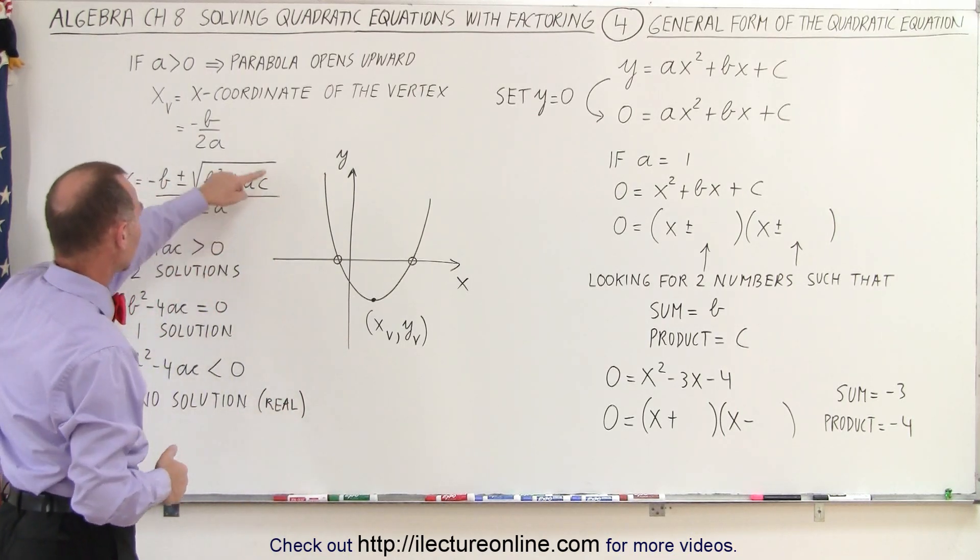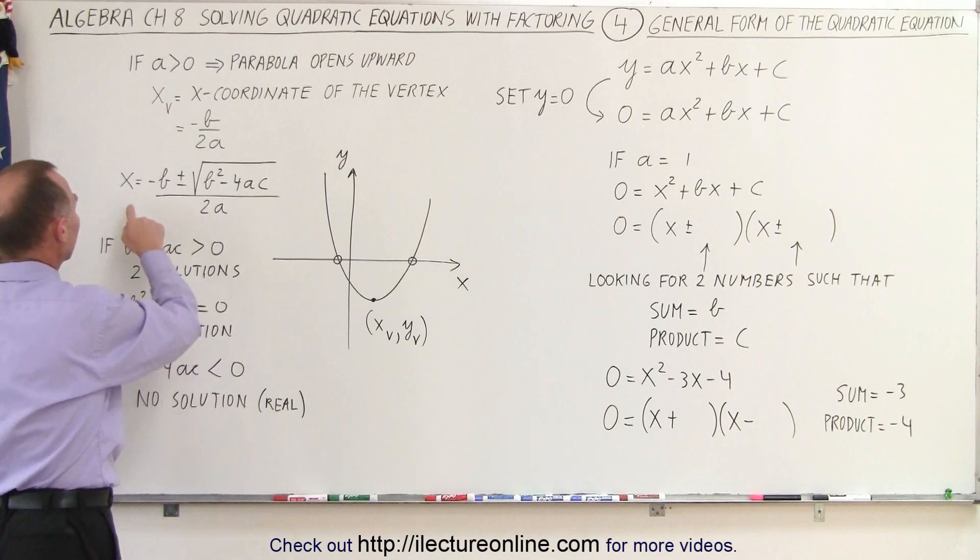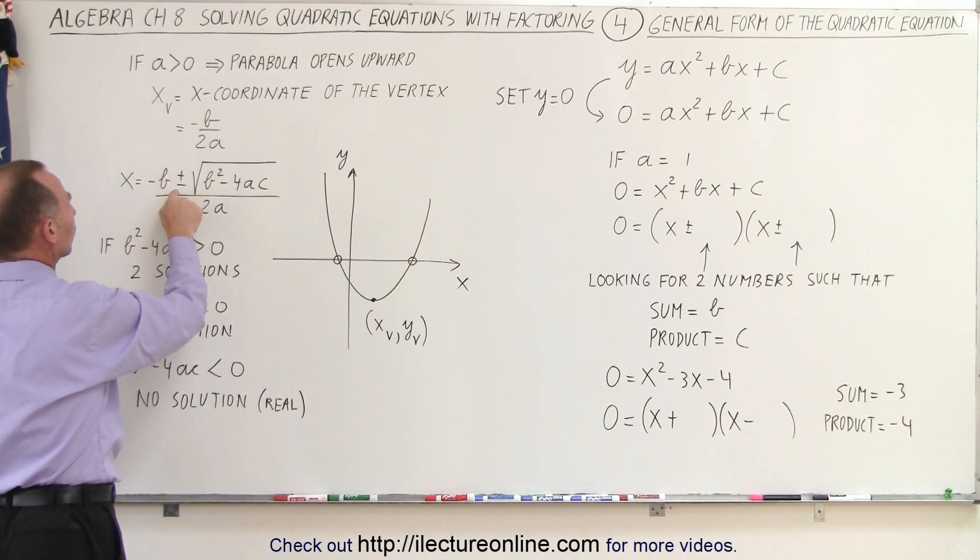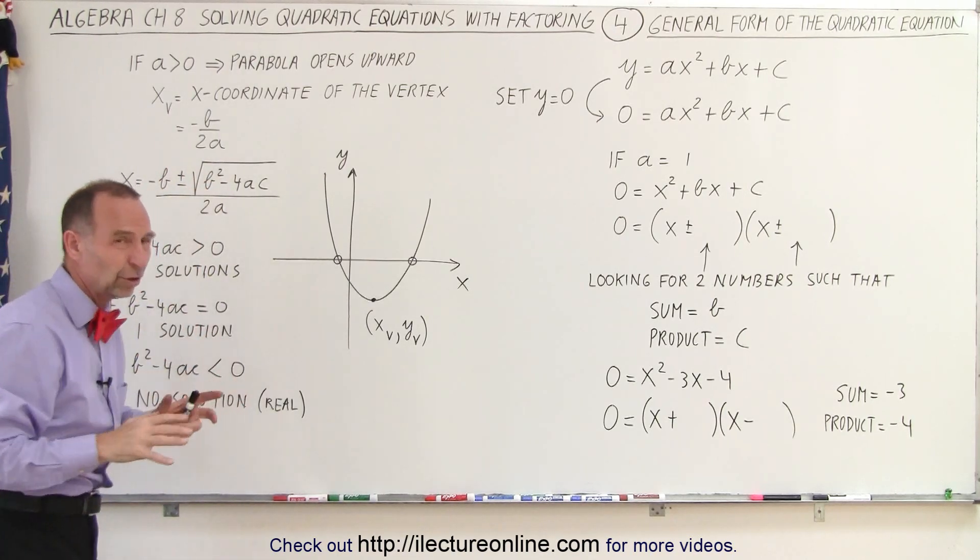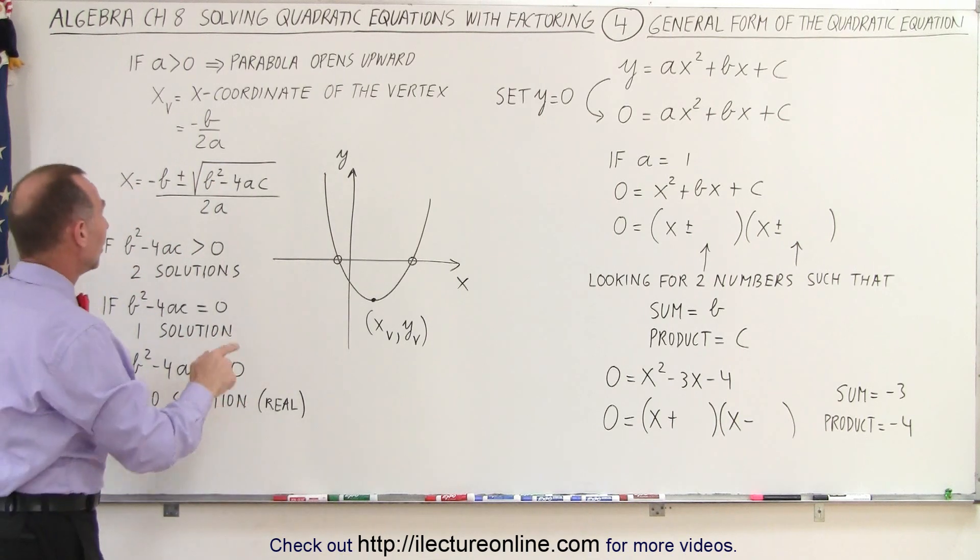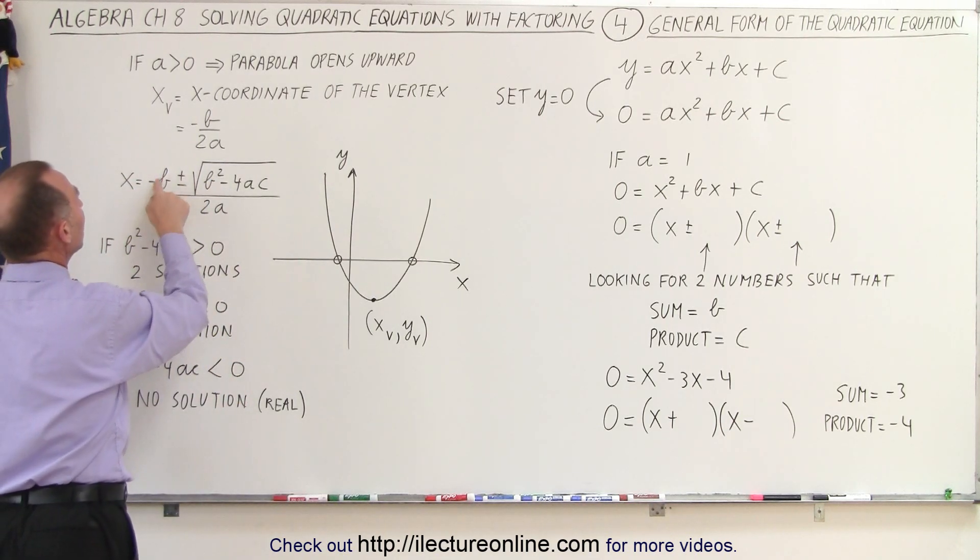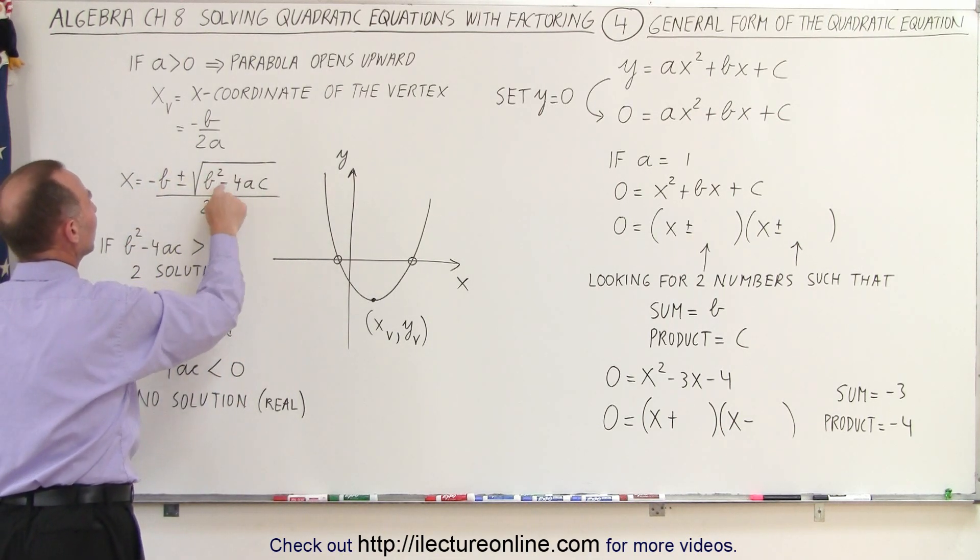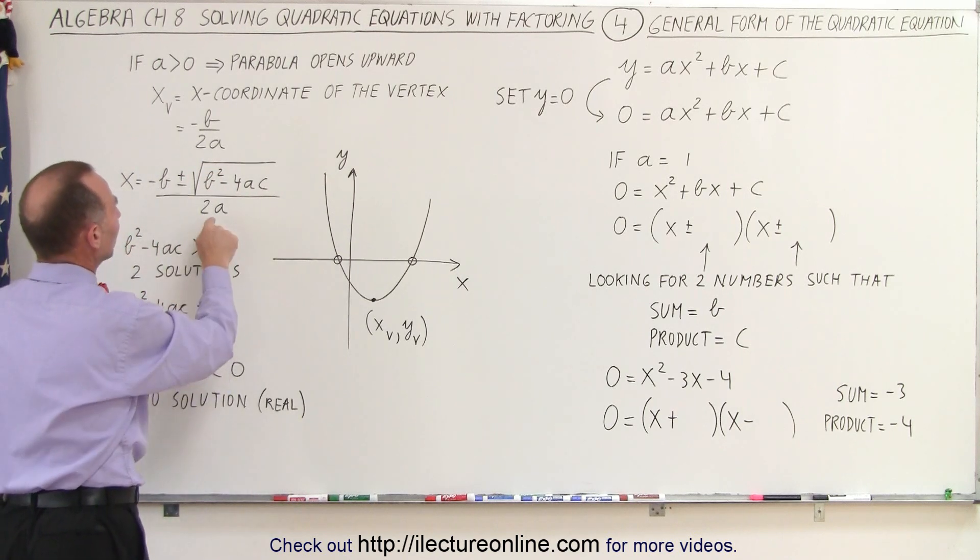If we then look at the quadratic equation, we end up with x equals negative b plus or minus the square root, or I should say this is the quadratic formula, as we call it. So we write x equals minus b plus or minus the square root of b squared minus 4ac, all divided by 2a.